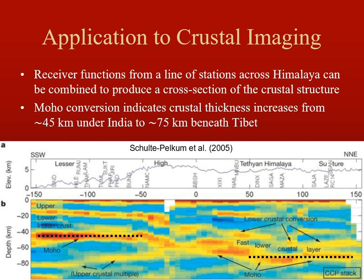Receiver functions can also be used in other ways: to look at plates, lithospheric thickness, and to image the down-going subducted plate interface relative to the overriding plate. Other key velocity discontinuities can be imaged with receiver functions.